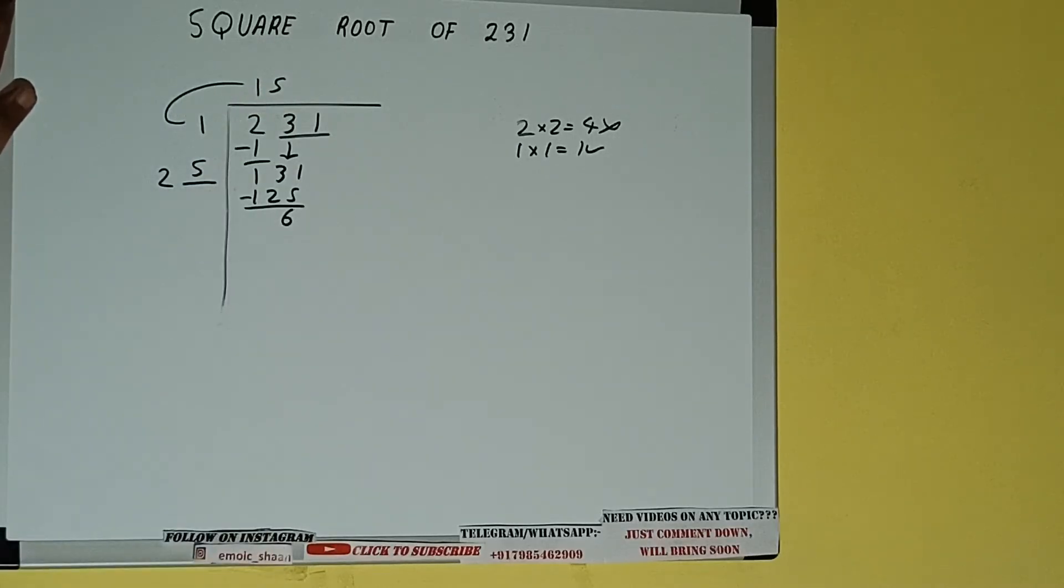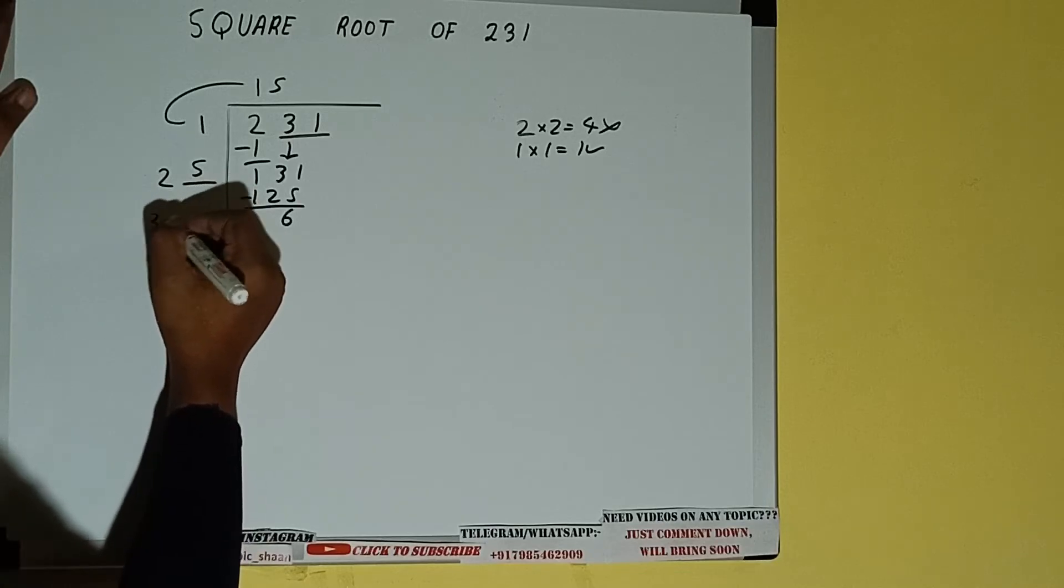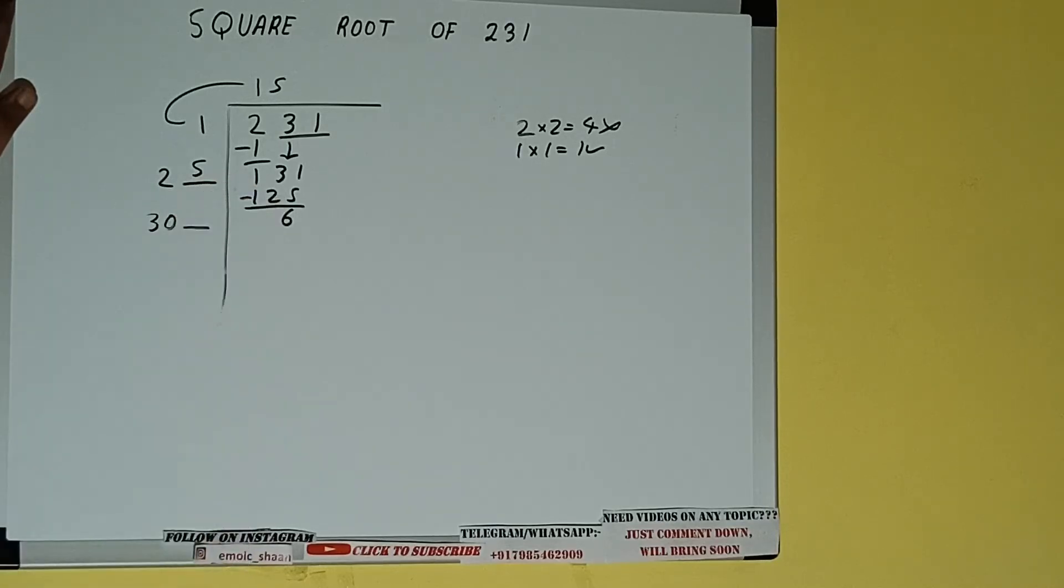Now 25 into five we did, so add both. So 25 plus five will be 30. Write it here and keep a digit extra, and this number we need to make it big.